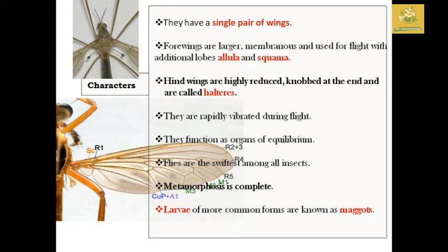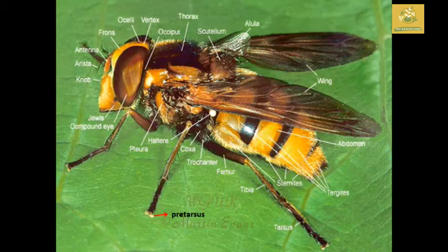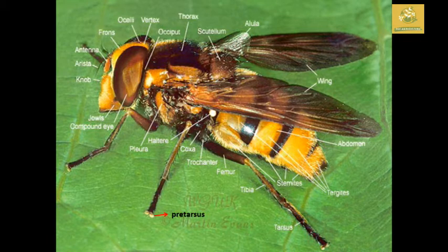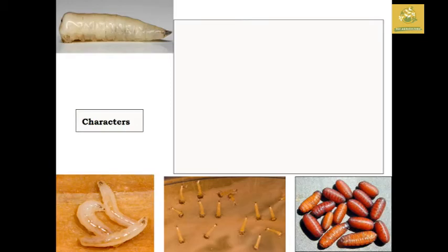The halteres are rapidly vibrated during flight and function as organs of equilibrium. Flies are said to be swift among insects. Metamorphosis is complete in this group of insects. The larvae of more common forms are known as maggots. You can see the picture where parts like antenna, aristae, knob, and compound eyes are visible in the Diptera group of insects.